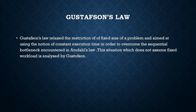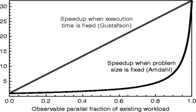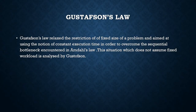Here is a diagram showing the difference between Amdahl's law and Gustafson's law. Amdahl's law shows speed-up when problem size is fixed, while Gustafson's law shows speed-up when execution time is fixed. According to Gustafson's law, if the number of parallel operations for a problem increases sufficiently, then the sequential operations will no longer be as important.